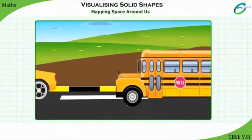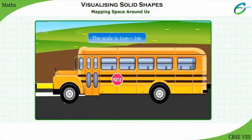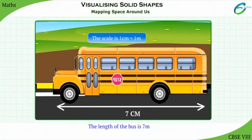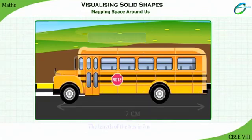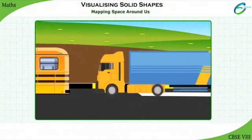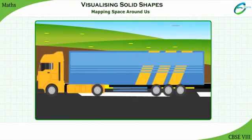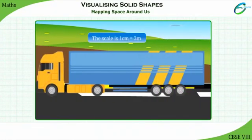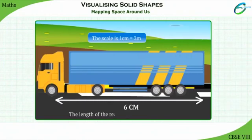Similarly, for the bus, the scale is 1 cm equal to 1 meter. Therefore, the length of the bus is 7 meters. For a big truck, we cannot draw the real truck length on the map. We therefore consider an easier scale. The scale is 1 cm equal to 2 meters. The length of the real truck will be 6 × 2 meters.